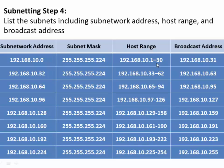The host range is the usable addresses. If the first address in the subnet is 0, that's the network address. The last address is 31, since the next subnet is 32 — so 31 is the broadcast address. The usable hosts are between 0 and 31, leaving 1 to 30. Similarly, on the 32 subnet, the first usable address is 33, because 32 is the network address. Addresses 33 to 62 are the usable host addresses, and the broadcast address is 63 — the last address before the next subnet.